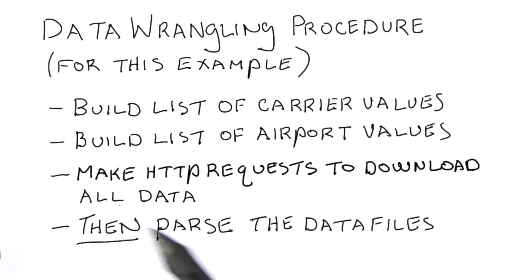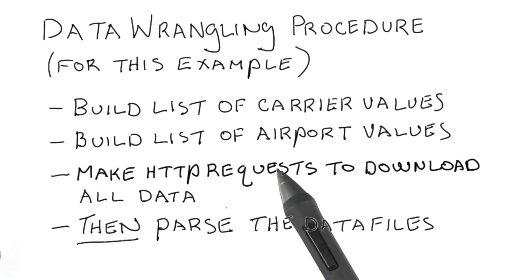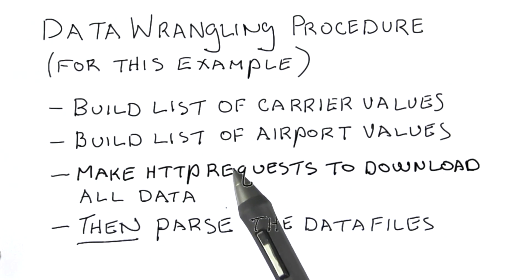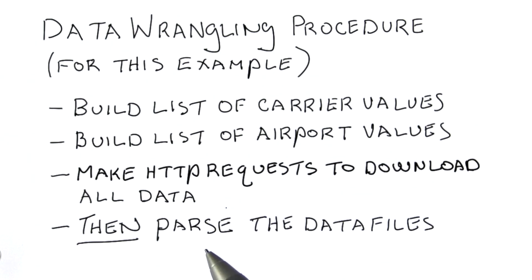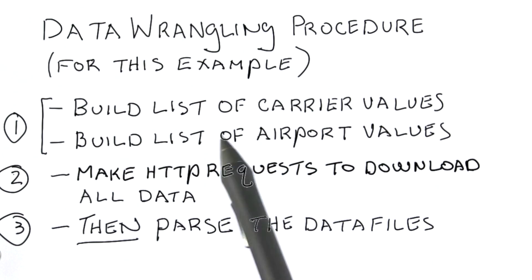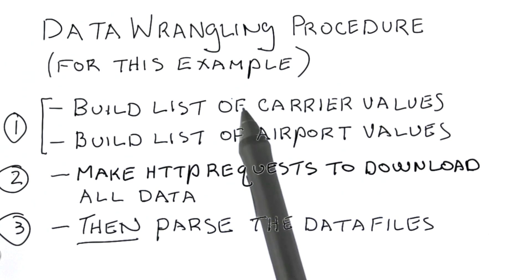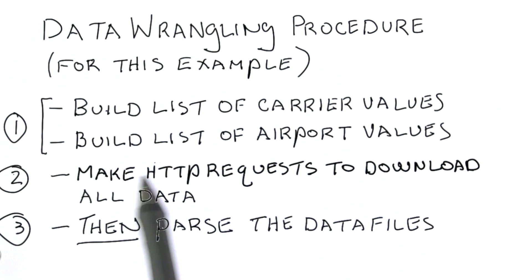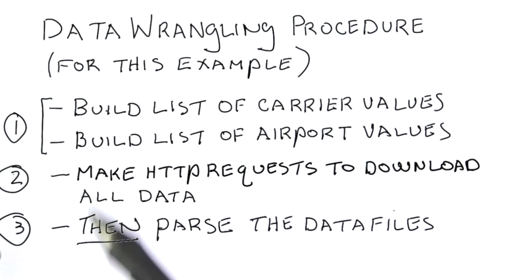This is actually a best practice. When you've got a scraping task, it's often going to look something like this — you really want to grab all the data you need first, and then do your scraping in a separate process. So for this particular problem, there are essentially three steps: first, build all the values you'll use to make HTTP requests; then make all the HTTP requests and download the data; and finally, parse the data you want out of those files, shaping it into the particular items you want to use.